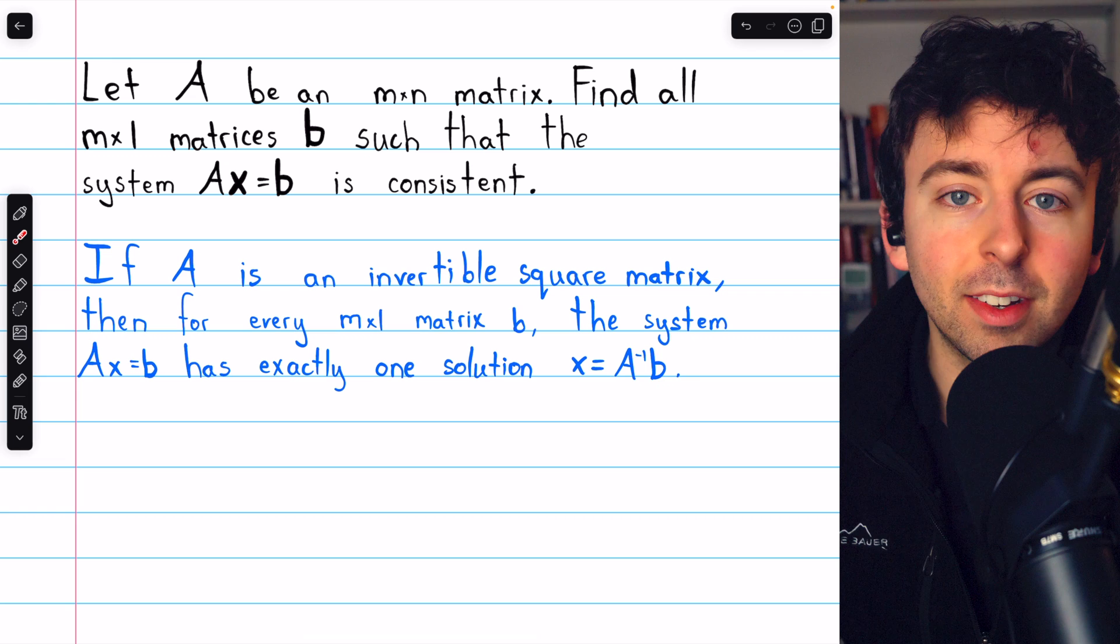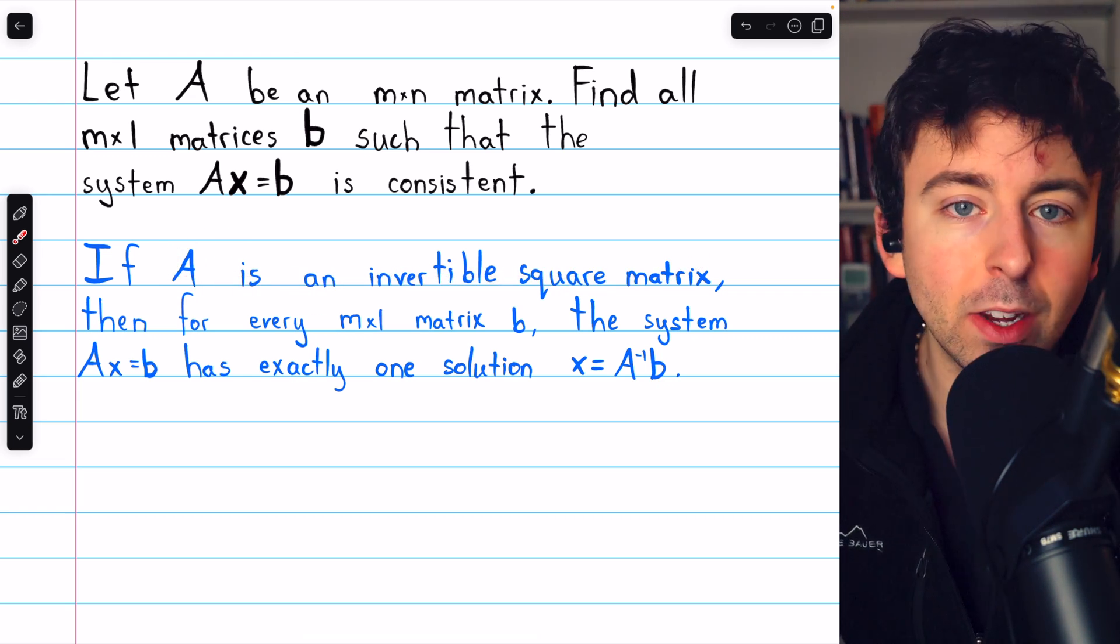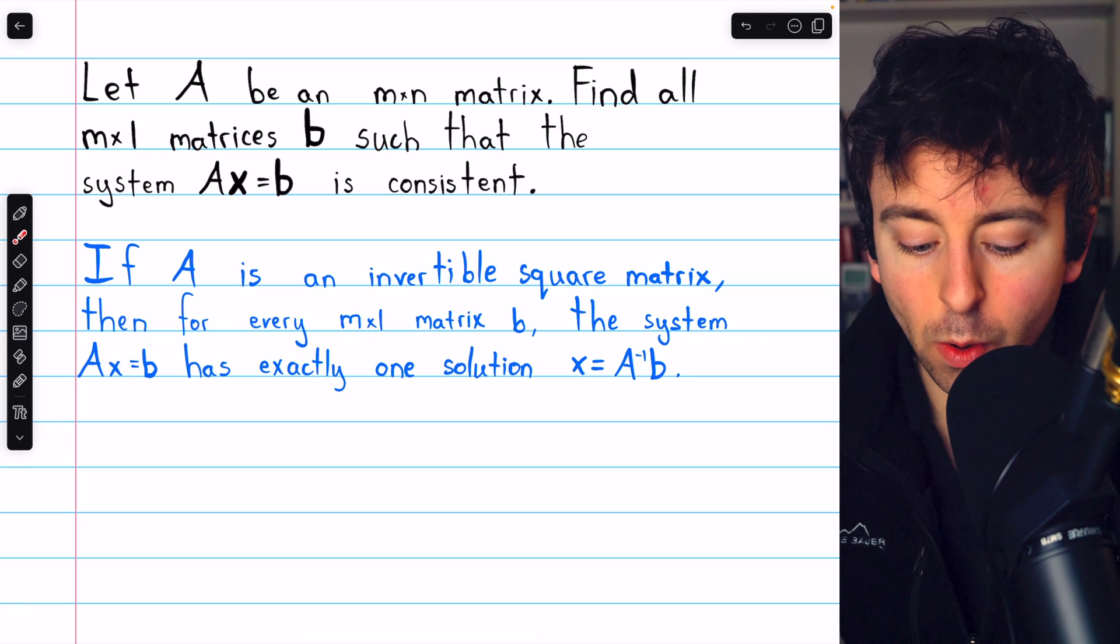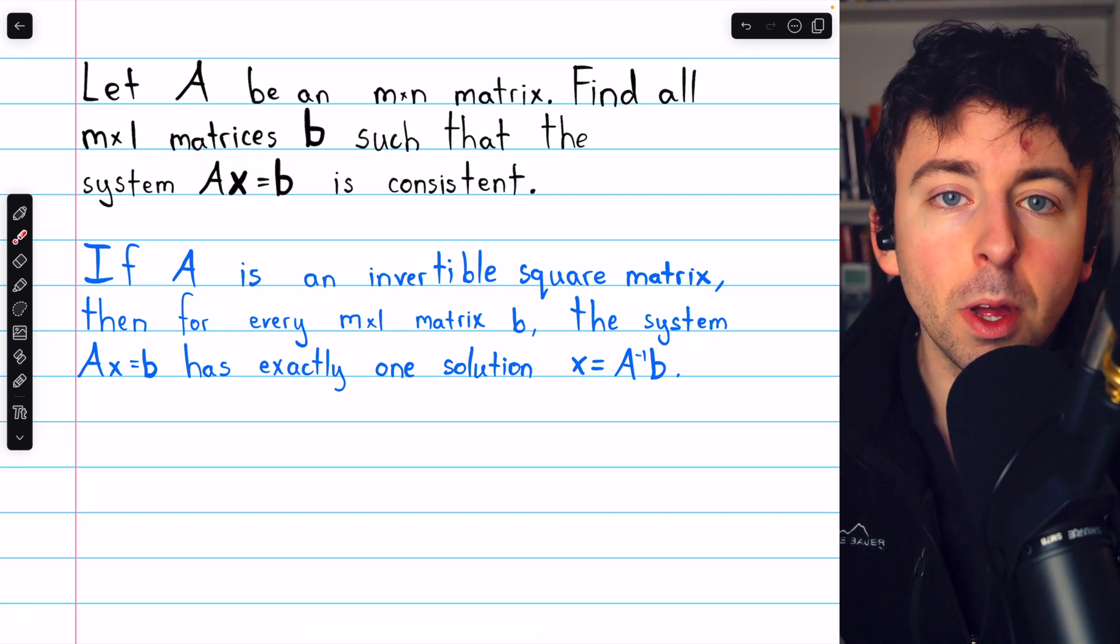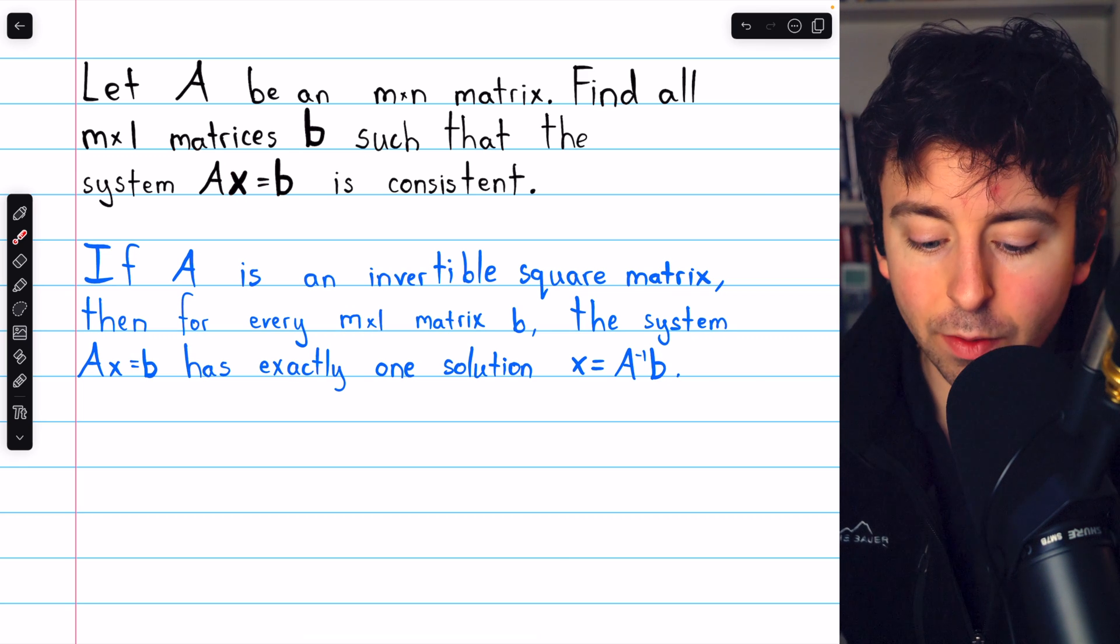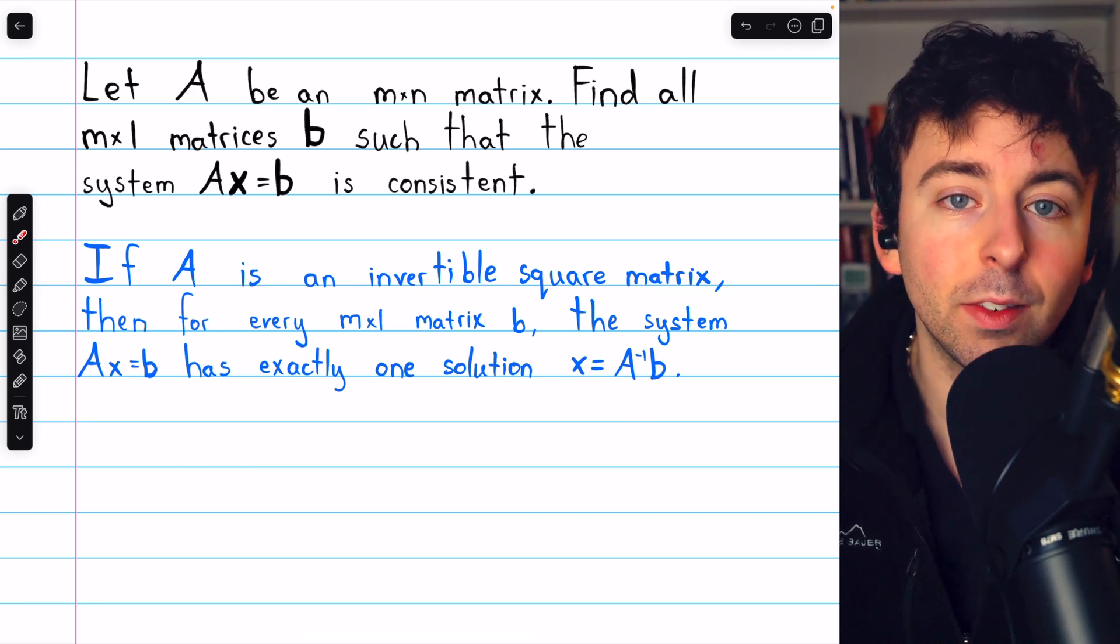We've previously discussed this sort of problem in the case where A is an invertible square matrix. Link in the description to the lesson going over that. If A is invertible, we can easily solve this by just multiplying on the left by A inverse. That would cancel out this A and give us the unique solution that x equals A inverse b.